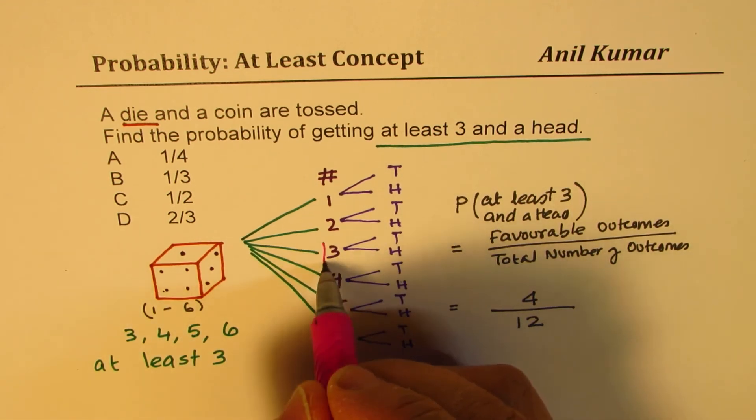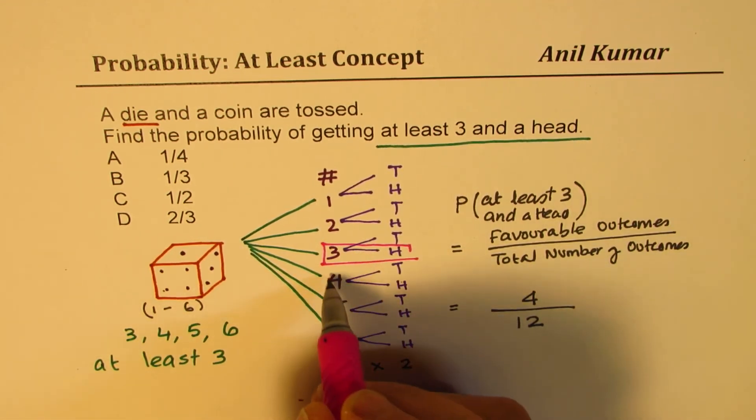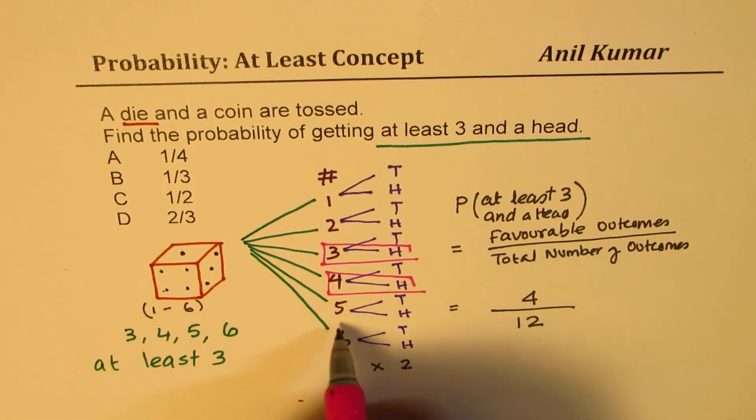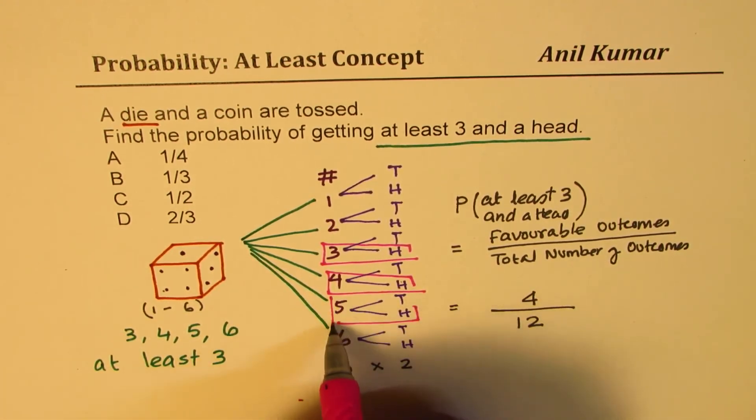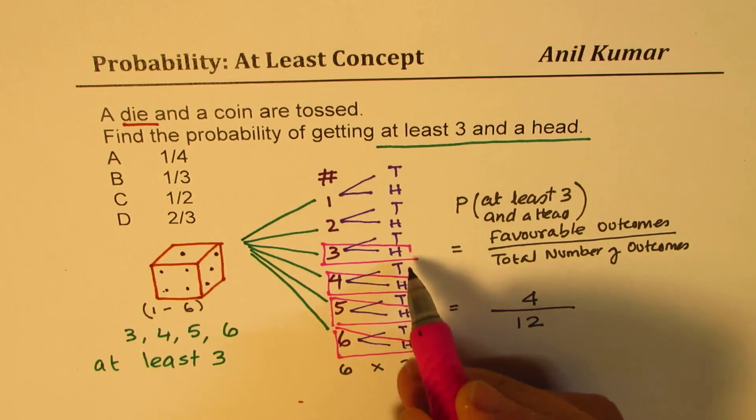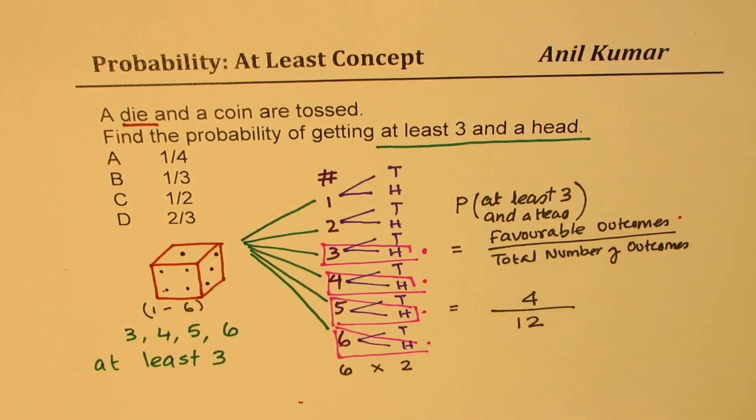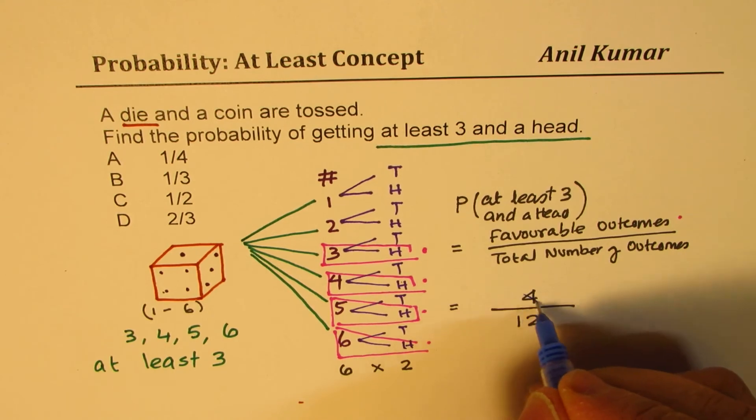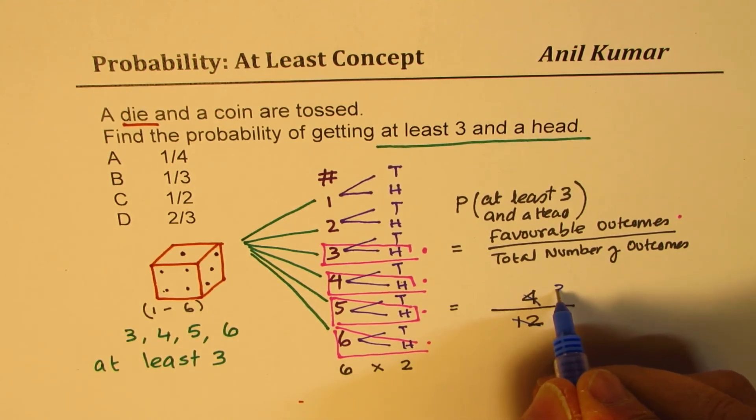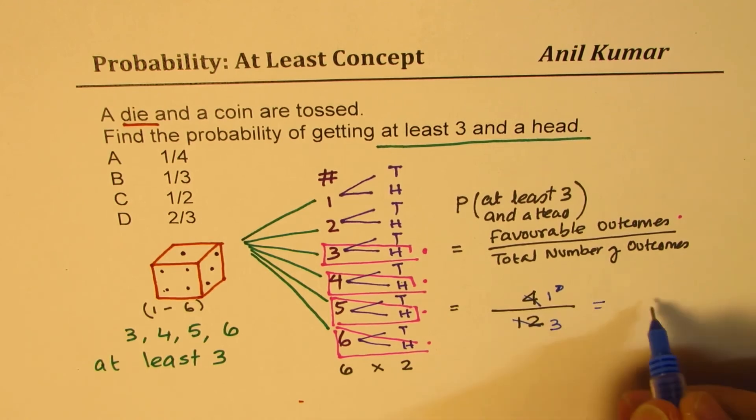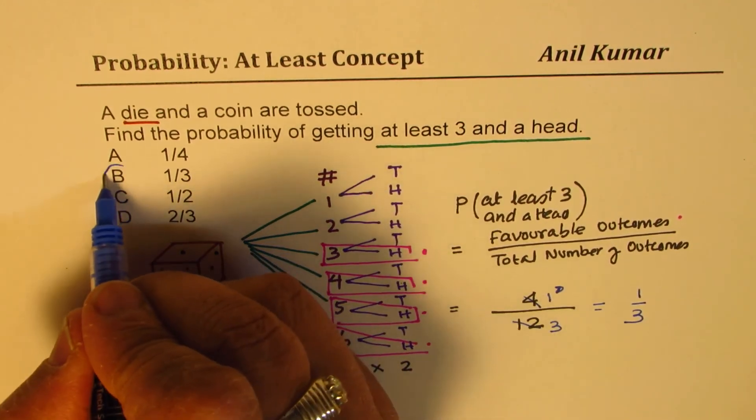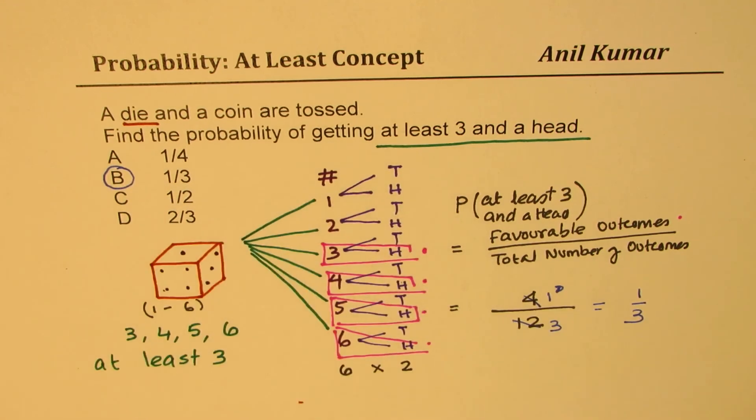We could actually visualize from here and see what our outcomes are: three and head, four and head, five and head, and six and head. These are the four favorable outcomes. We get four over twelve as our answer. When you simplify this, both could be divided by four, so you get one over three. Option B is the right option.